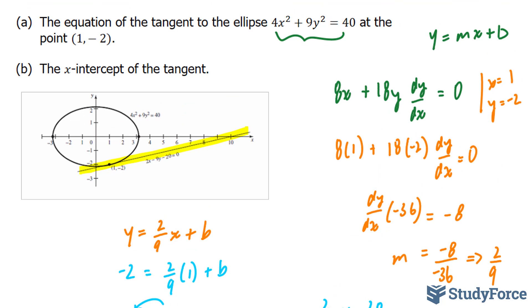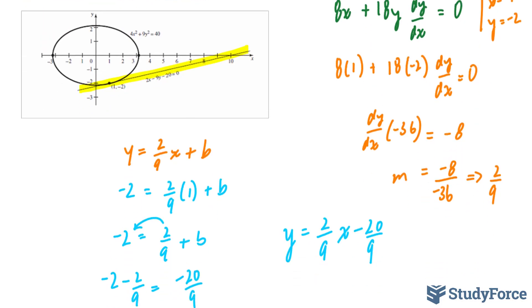Let's move on to part b. Part b, they ask us to find the x-intercept of the tangent. To find the x-intercept, notice that the x-intercept occurs once—of course, it's a straight line—and it occurs when y is equal to 0.